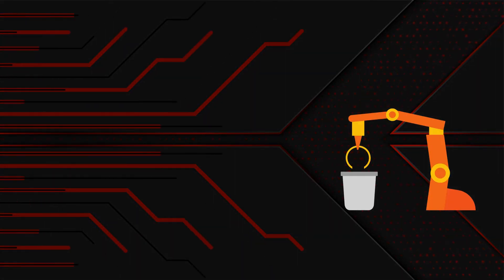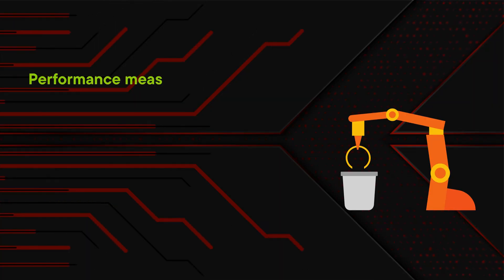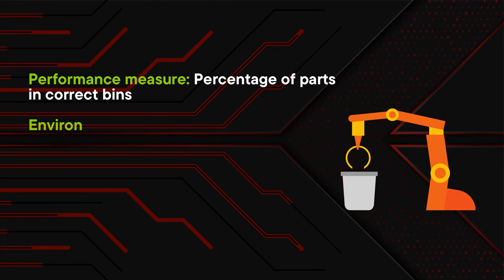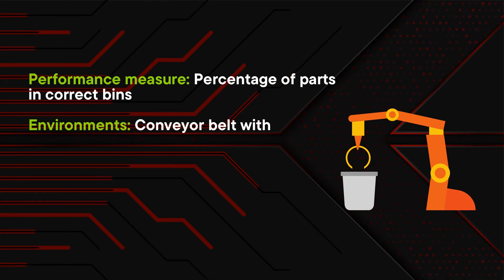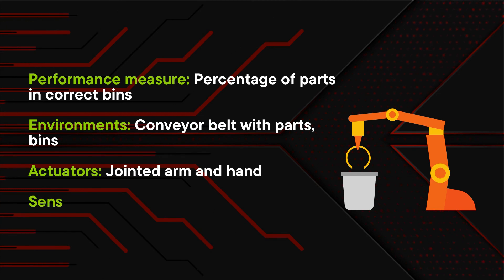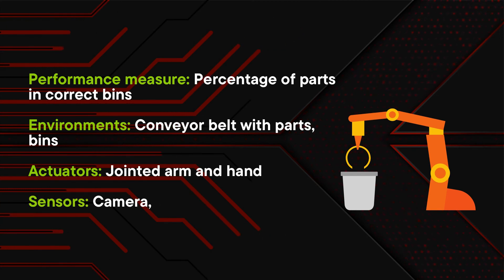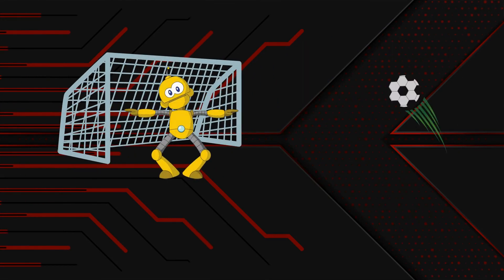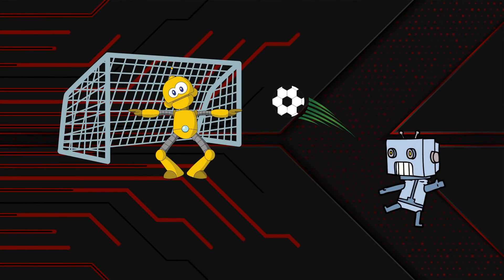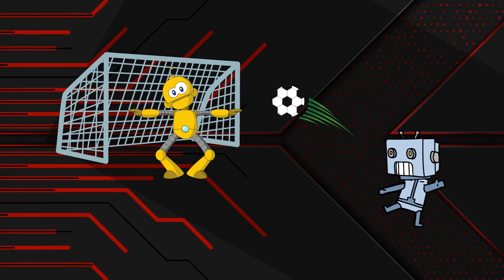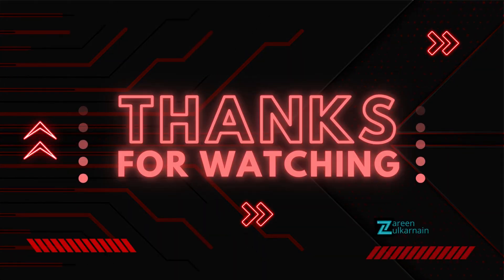Another example is a part-picking robot. The performance measure will be the percentage of parts in correct bins. The environments are conveyor belts with parts and bins. The actuators will be a jointed arm and hand, and sensors are cameras and joint angle sensors. Can you think of what other PEAS properties apply to a robot soccer player? That's all we have for now — thanks for watching!